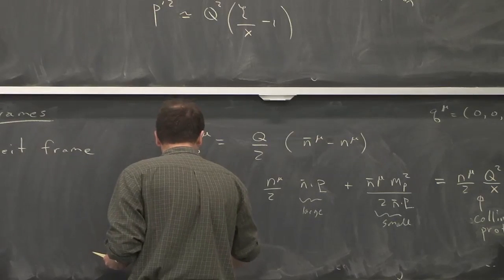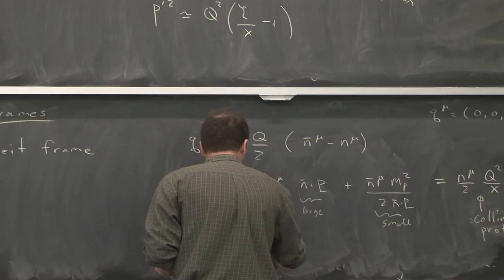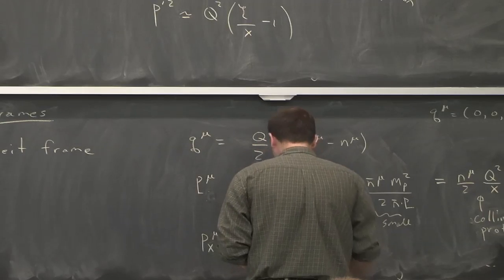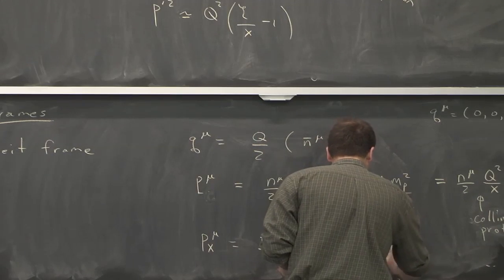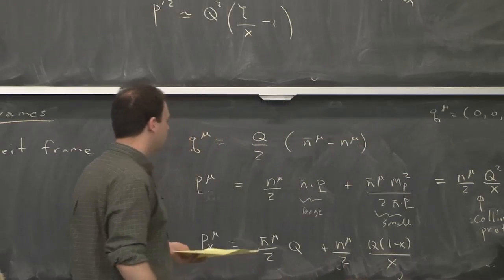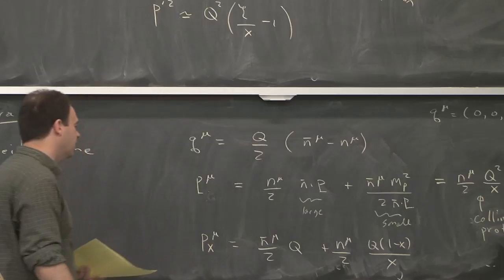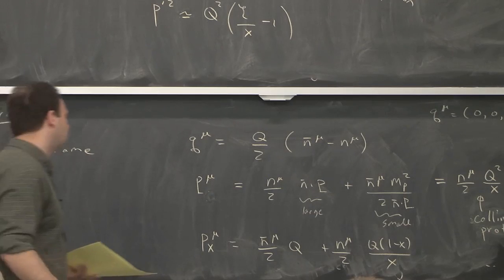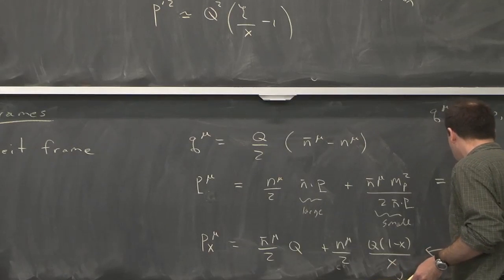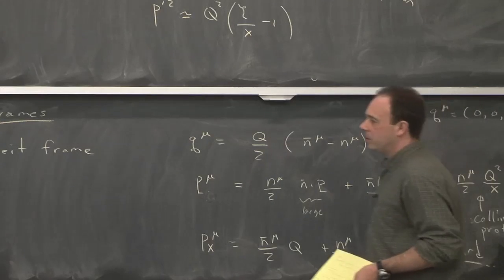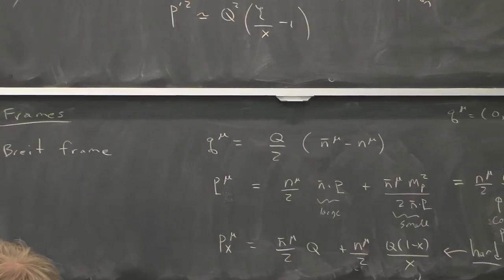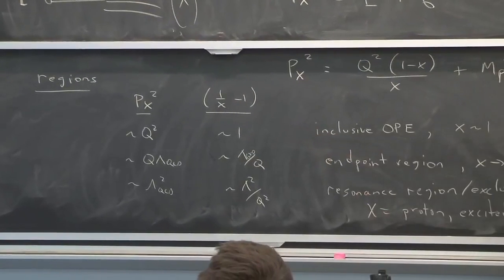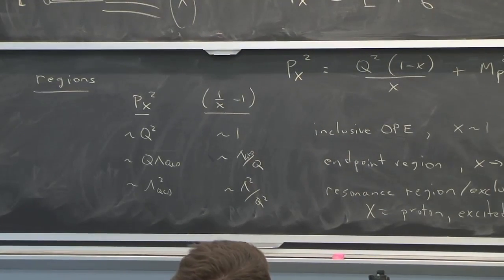And if we look at P_x, and we just, again, I'm not going through the details of this. But if we just decompose P_x in terms of these coordinates, then we get this. And so as long as this factor 1 minus x over x is of order 1, you see that there's a large component in n and a large component in n bar. And that means it's hard. So what would happen in these other cases here is that you would change that, right? It would no longer be hard. And that's why these cases here differ. But as long as we're in this first case, this is hard.